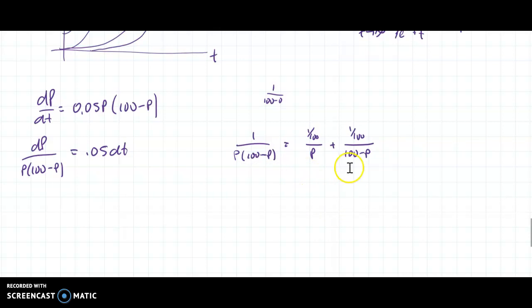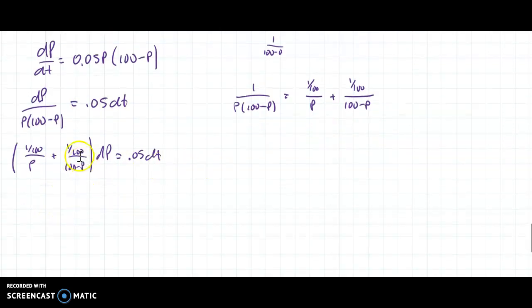So what I get is 1/100 all over P plus 1/100 all over 100 - P times dP is equal to 0.05 dt. I haven't integrated yet. And actually, what I'm going to do here is multiply by the 100 because it is in my way. I don't want to have it over here. It's a lot easier to have it on the right side.